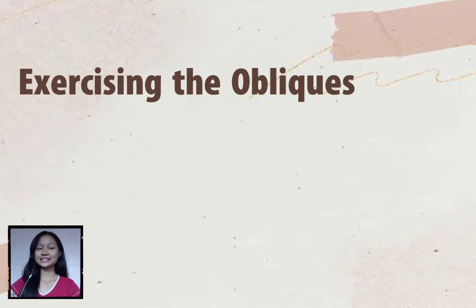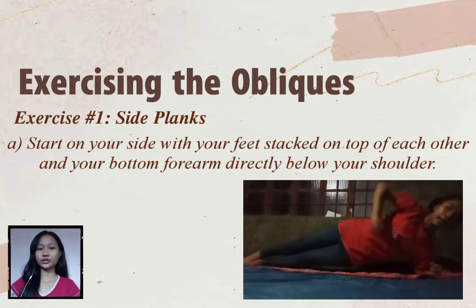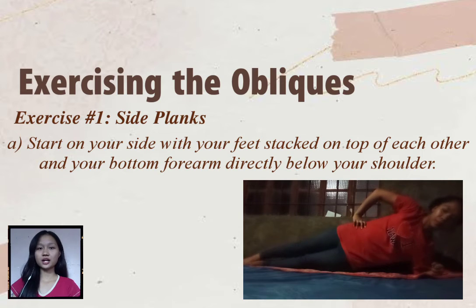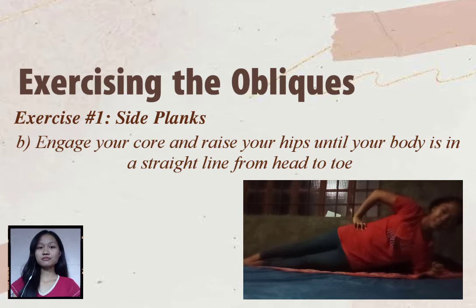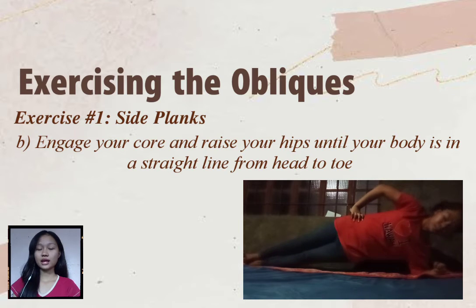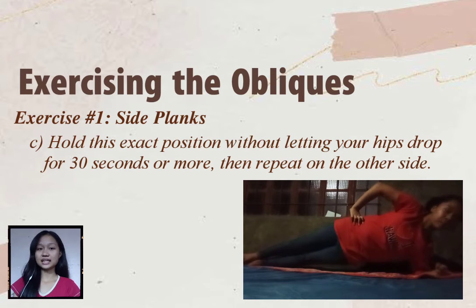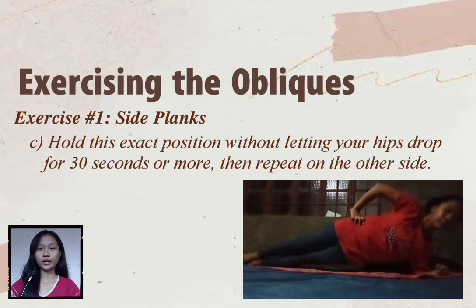Here are the exercises for the oblique muscles. The first is side planks. To do a side plank, start on your side with your feet stacked on top of each other and your bottom arm directly below your shoulder. Engage your core and raise your hips until your body is in a straight line from head to toe. Hold this position without letting your hips drop for 30 seconds or more, then repeat on the other side.